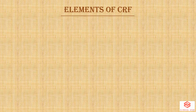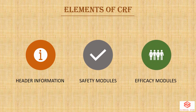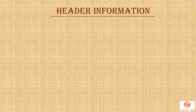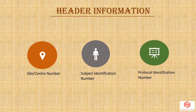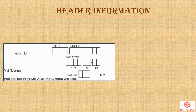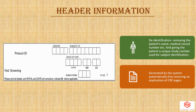From a designing perspective, the elements of CRF include header information, safety modules, and efficacy modules. Header information provides key identifying information such as site or center number where the trial is conducted, subject identification number, and protocol identification number. Before sending the clinical trial data of a subject to the sponsor, the data is usually de-identified by removing the patient's name, medical record number, etc., and giving the patient a unique study number for subject identification. Generally, these data are repetitive and are designed to be generated by the system automatically, thus ensuring no duplication of CRF pages.